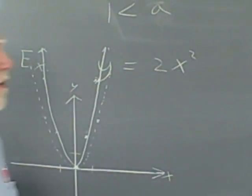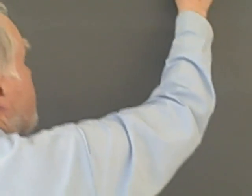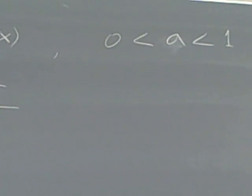Now if we move over here, we'll look at another one. Only in this case, a is between 0 and 1. It's less than 1, but greater than 0.